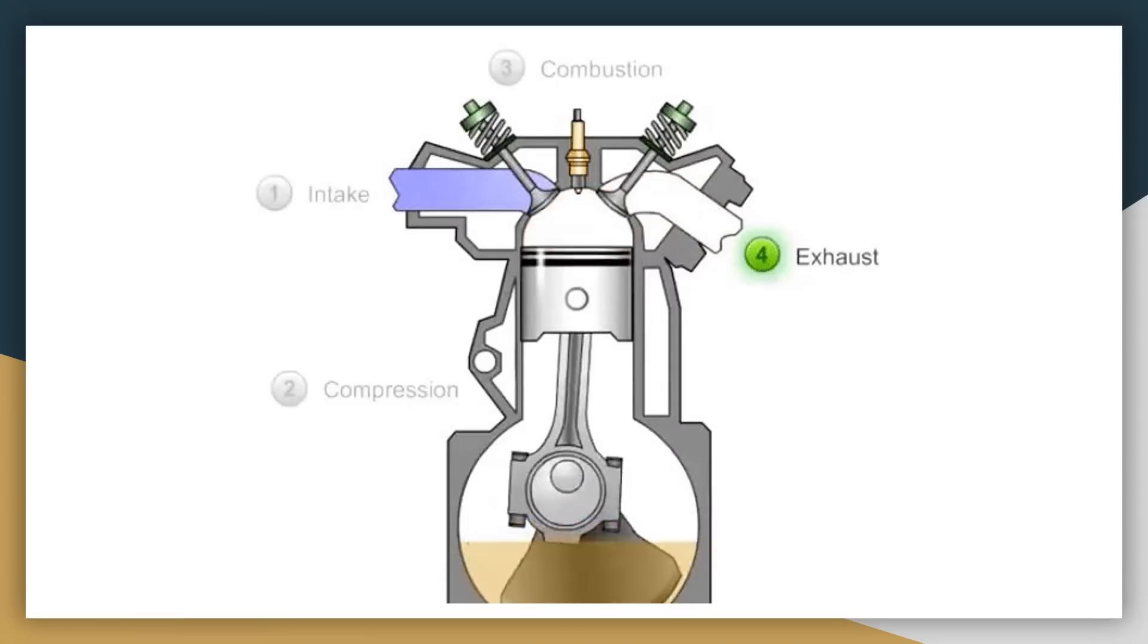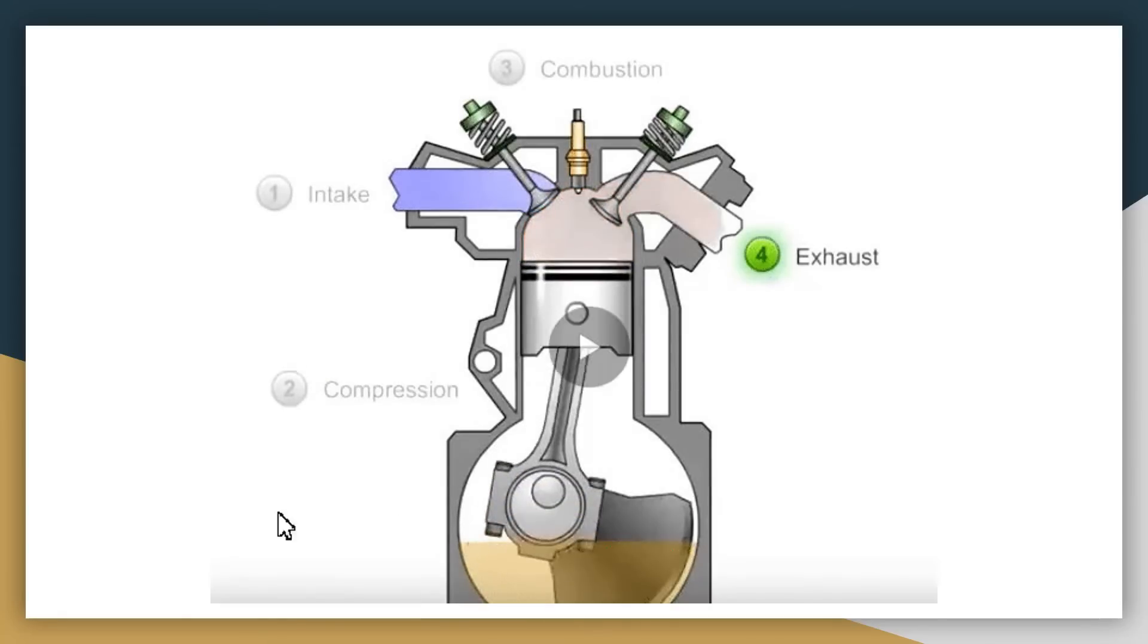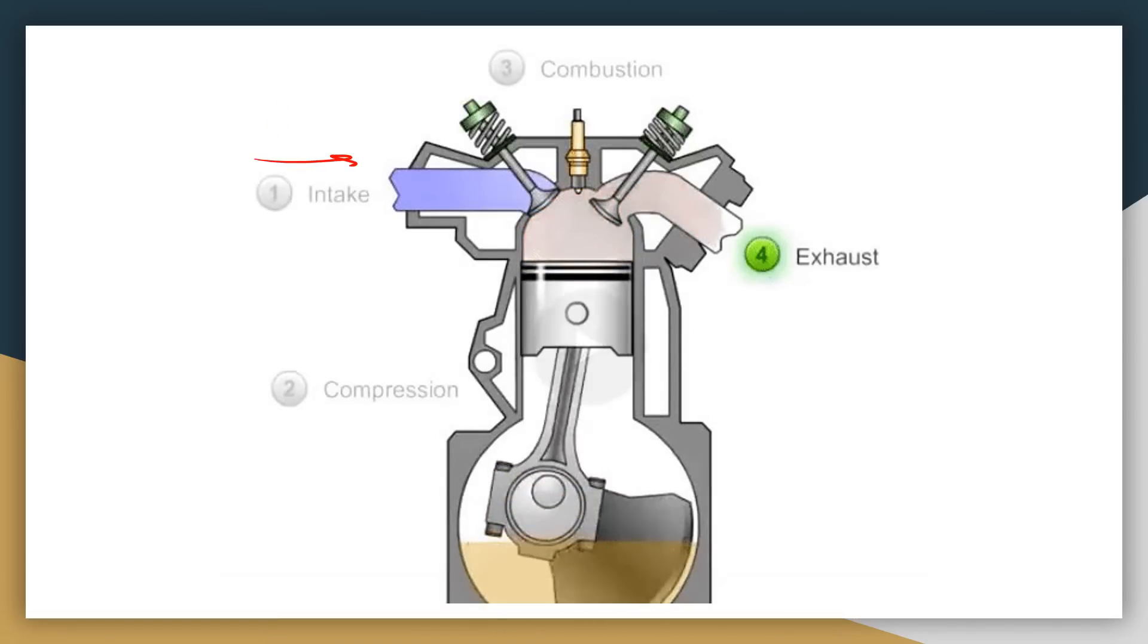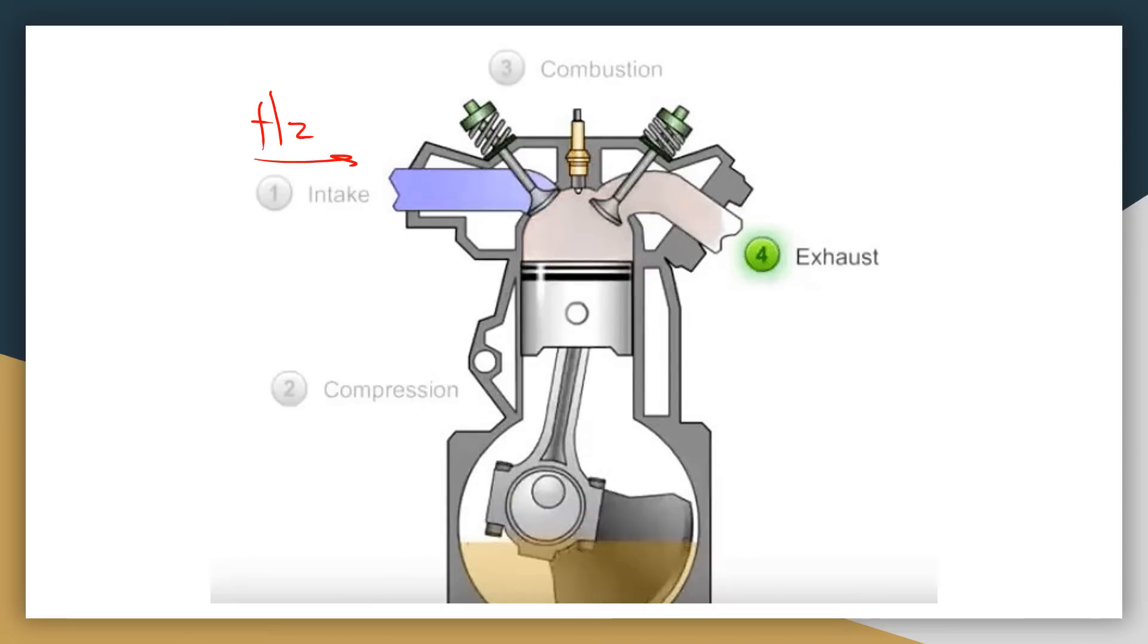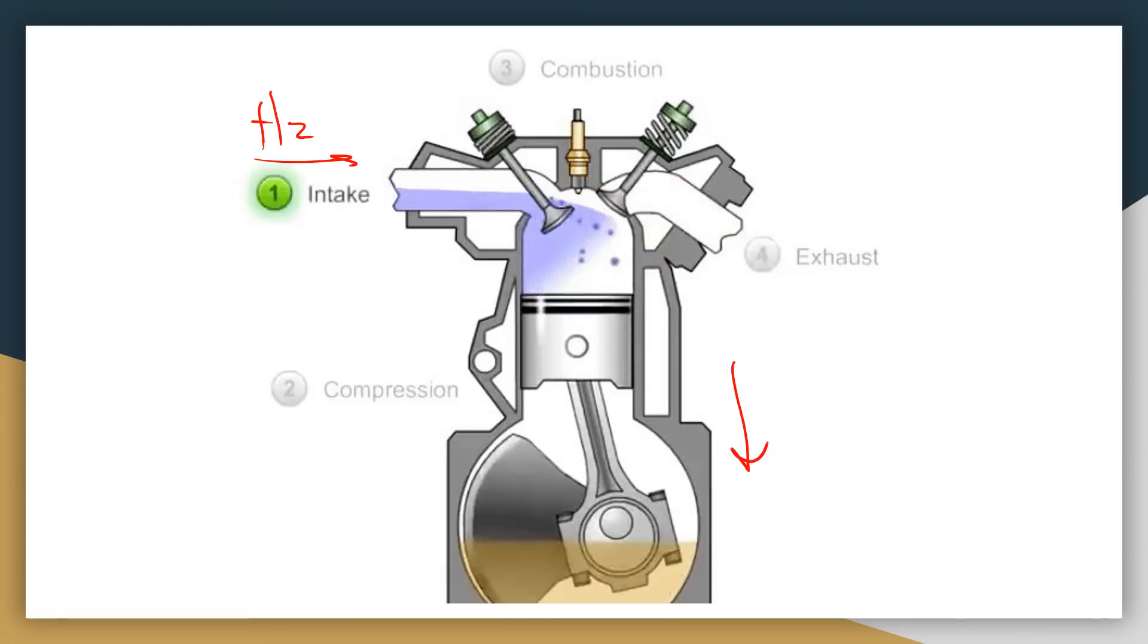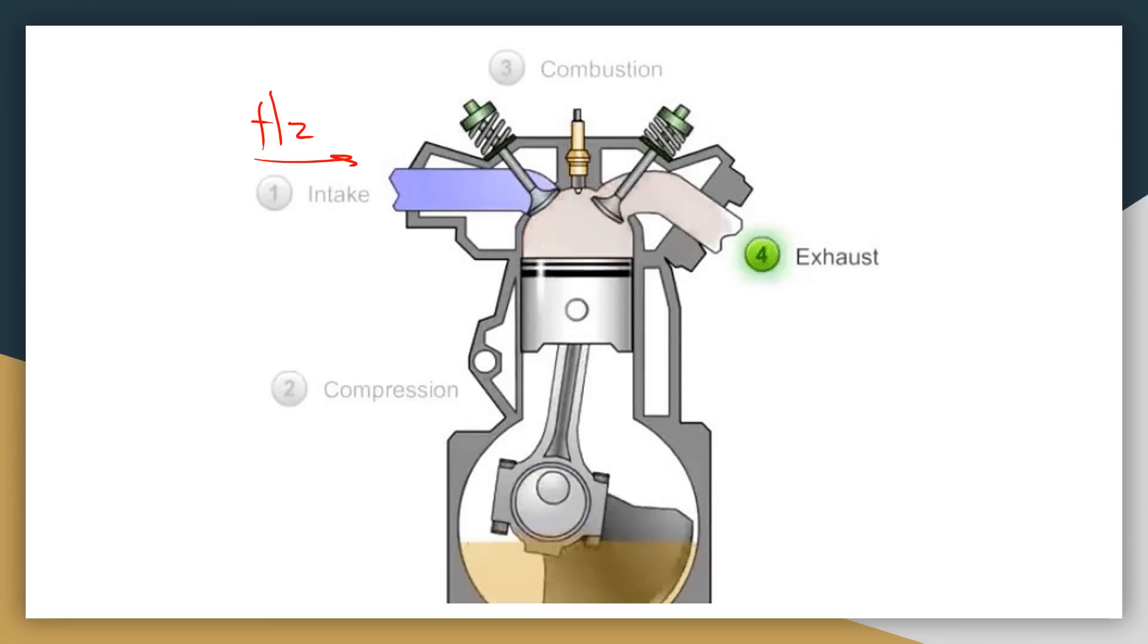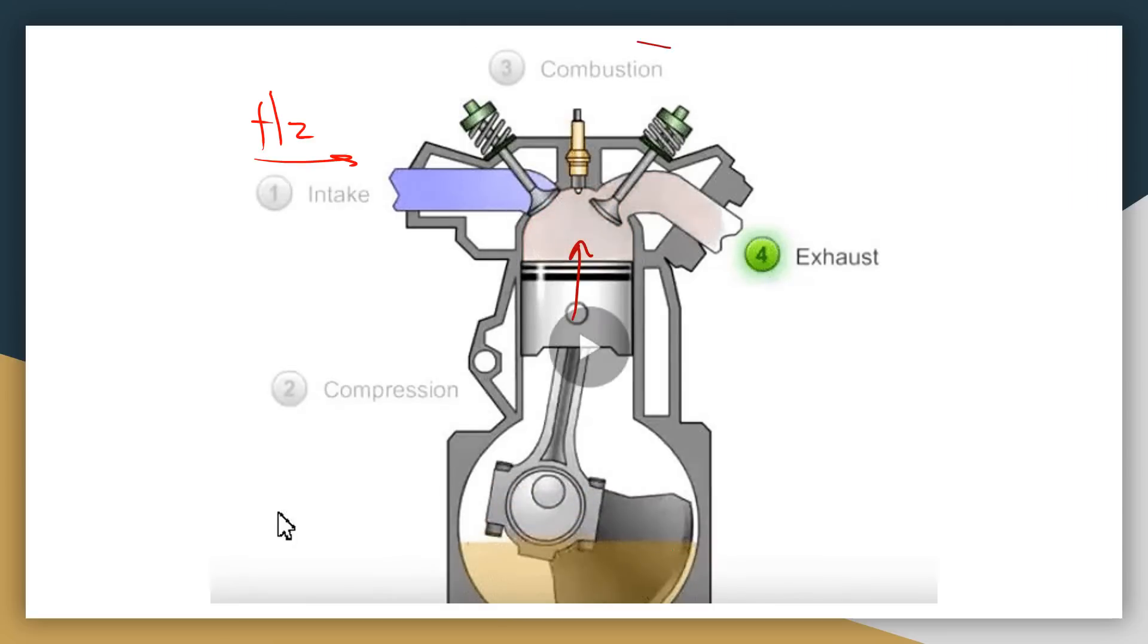So as we take a look at the diagram, we can see how the process of an internal combustion engine flows through the steps. The first step we see is where we have our hydrogen coming through. And then we see that our natural compression takes place. We actually have our compression that's forcing the cylinder up, and then that's when we start igniting the combustion step.